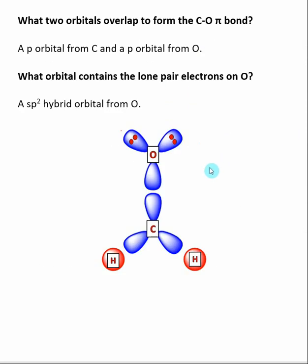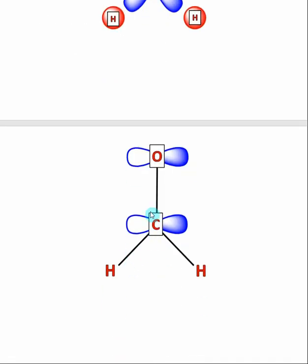Now we can take a closer look at how these orbitals overlap to form the molecule. Both the oxygen and the carbon are sp2 hybridized, meaning they will each have three hybrid orbitals. These three hybrid orbitals align to form a trigonal planar geometry as predicted by VSEPR. For the oxygen, two of these hybrid orbitals contain the lone pair electrons, and one goes to make the C-O sigma bond. For carbon, one sp2 orbital overlaps with the sp2 orbital from oxygen to form the C-O sigma bond, and the last two hybrid orbitals from carbon overlap with an s orbital from hydrogen to form the C-H sigma bonds. This makes the basic framework of the molecule, giving us the C-H sigma bonds and the C-O sigma bond.